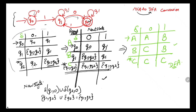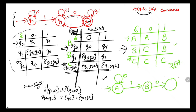We can also draw the transition diagram for the converted DFA: at A, with 0 we come back to A, with 1 it goes to B; from B with 0 it goes to C; C is the final state. This is the final DFA for the given transition diagram. I hope the method is clear. If you have any further doubts, please mention them in the comments below. Thank you for watching.